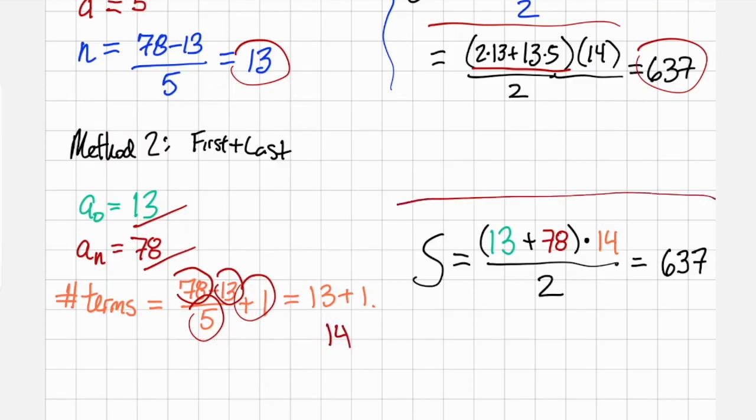Plugging this into the second formula from the previous page, we see that the sum is the first term plus the last term times the number of terms divided by 2, and that gives us the same value of 637. See you next time!